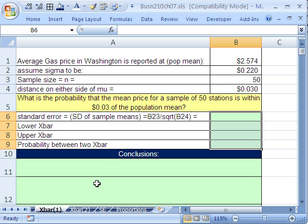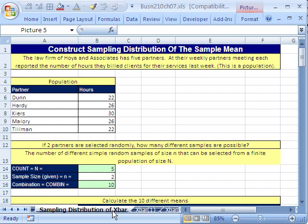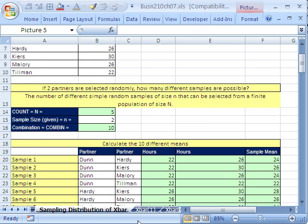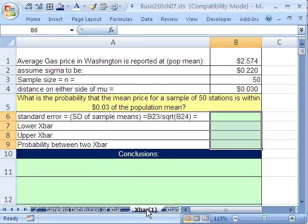We're talking about sampling distribution of x bar. We just got done proving a few things, and now let's see it in action, the central limit theorem in action.